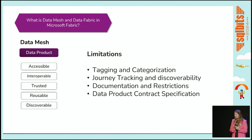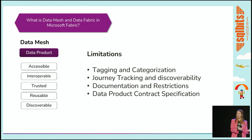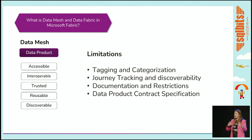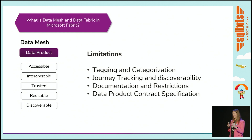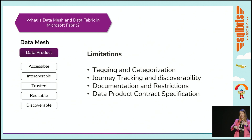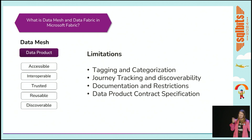There are limitations, though. It would be great to actually tag your data as a product in Fabric — right now you have to decide that 'certified' means 'product,' which may not make sense for every organization. It would also be helpful to document data products inside Fabric, connect them to business users, and add data product contracts or SLAs, so that other domains can know when to expect delivery and reuse the data product more easily.